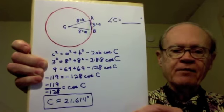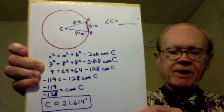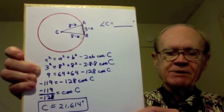Substituting into that formula, we have 3² = 8² + 8² - 2(8)(8) cos C. So 9 = 64 + 64 - 128 cos C.